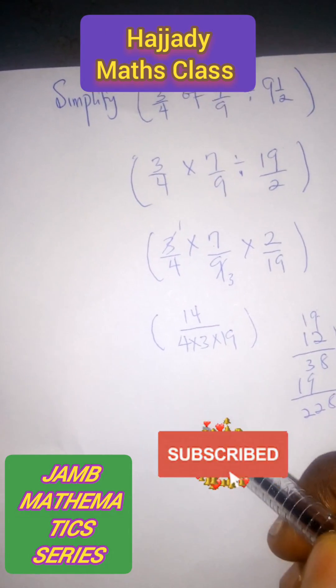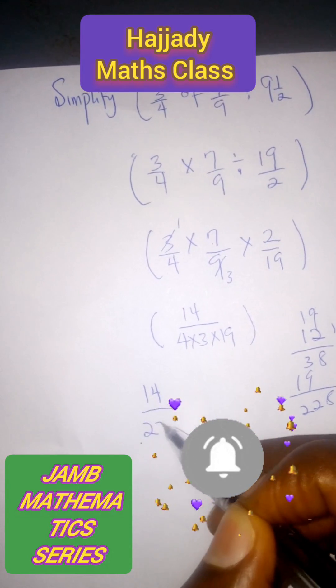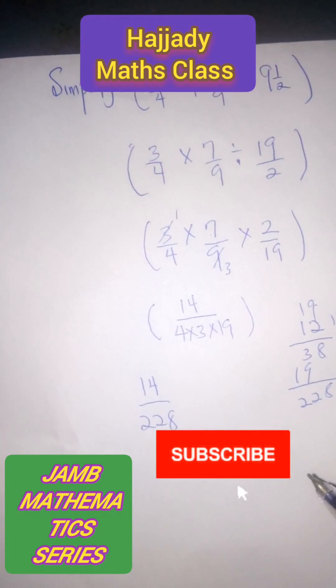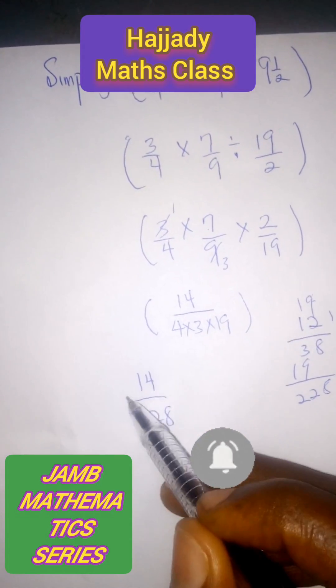So finally we have 14 over 228. To express our answer in the minimum value we can divide by 2. So 2 into 14 we have 7 over 114.